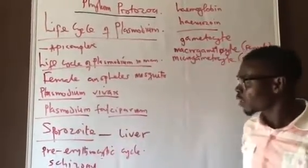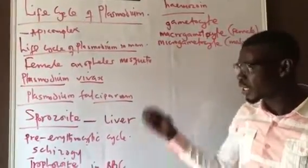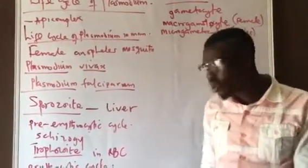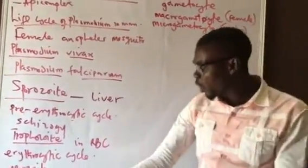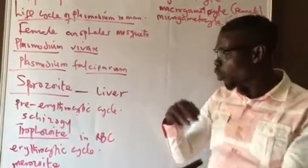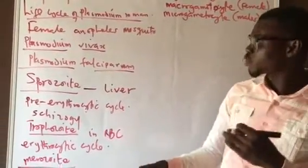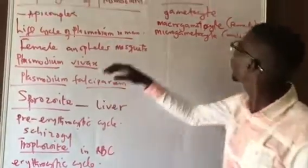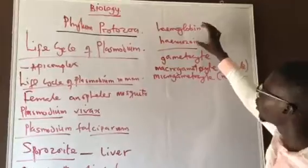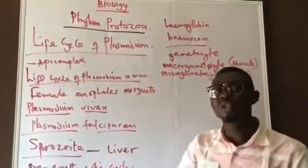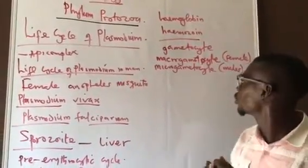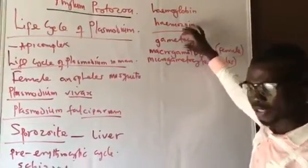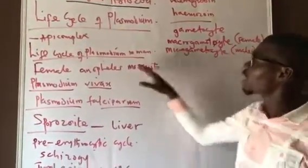To summarize the life cycle in man: from the sporozoite injected, it brings about the pre-erythrocytic stage, then the incubation period during which schizogony occurs. Schizogony gives rise to trophozoites; the trophozoites invade the red blood cells to form merozoites in the erythrocytic cycle. The merozoites feed on hemoglobin, release hemozoin causing fever, and then divide to give the gametocytes — that is the end of the life cycle in man.